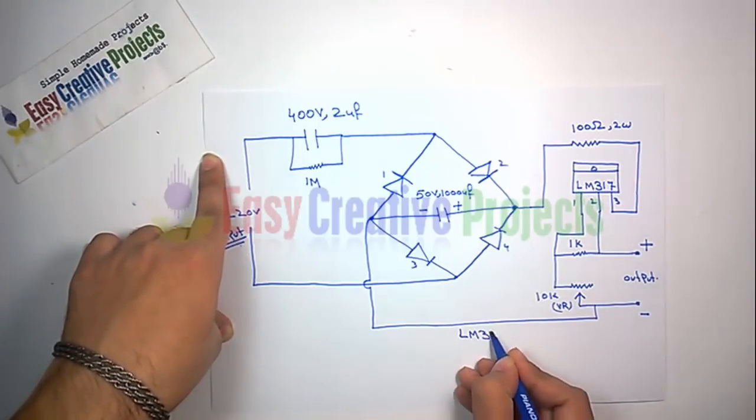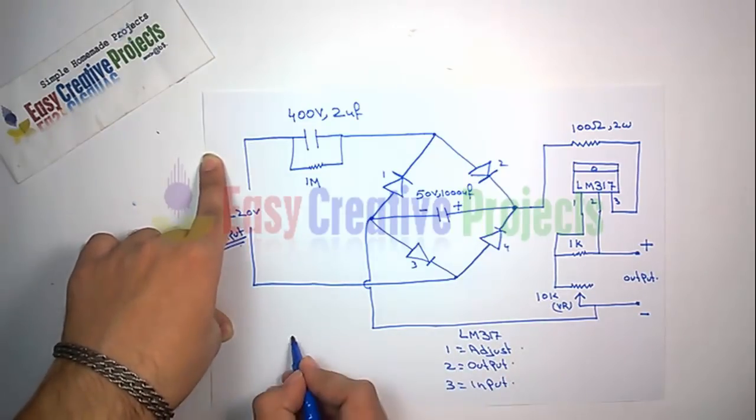LM317 has 3 pins. First for adjust, second output, and third pin for input voltage.